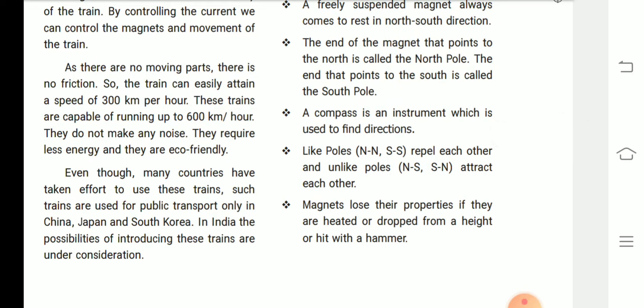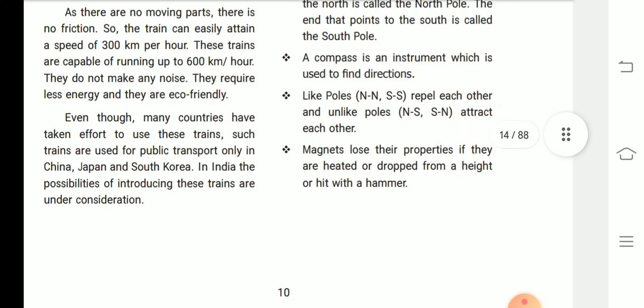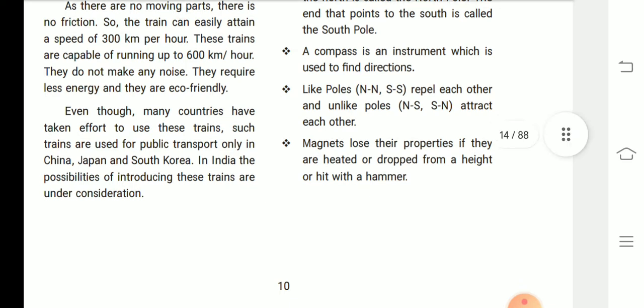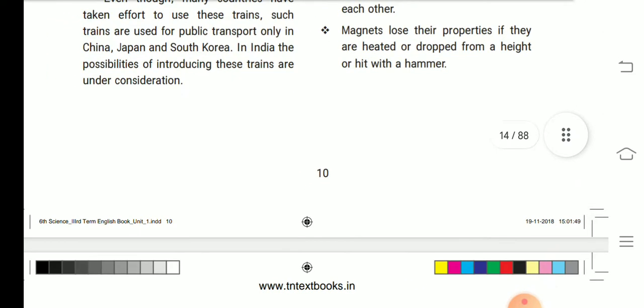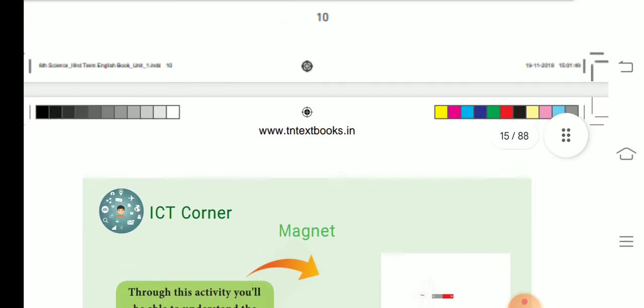Like poles—north and north, south and south—repel each other. And unlike poles—north-south, south-north—attract each other. Magnets lose their properties if they are heated, or dropped from a height, or hit with a hammer. Now the lesson is over, children.